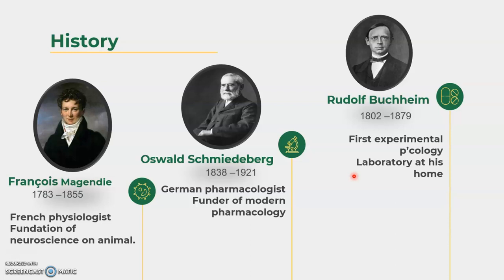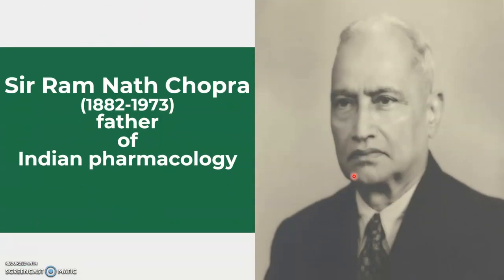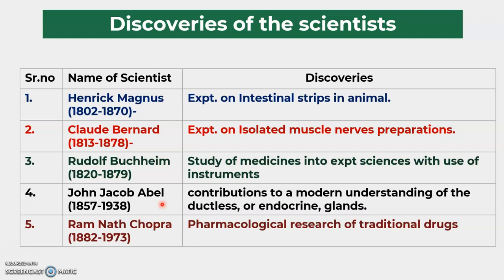Pause and write the discoveries and names of these scientists. Who is the father of Indian pharmacology? Sir Ram Nath Chopra is the father of Indian pharmacology. He discovered experimental pharmacology in India at the Calcutta research laboratory, conducting the first experiments in pharmacology. Other notable scientists include Henrik Magnusson, Claude Bernard, Rudolf Buchheim, John Jacob Abel, and Ram Nath Chopra. Write this table in your notebook to help complete your lab manuals.